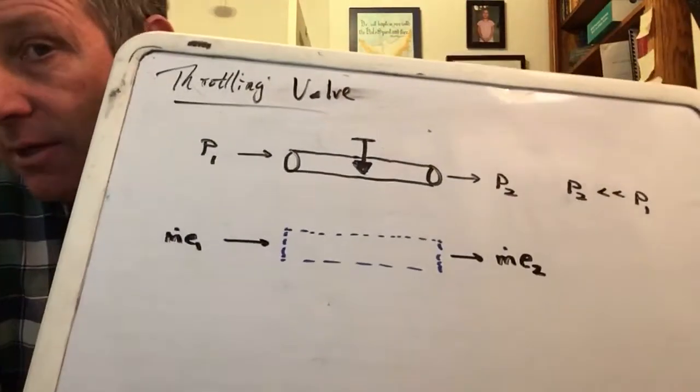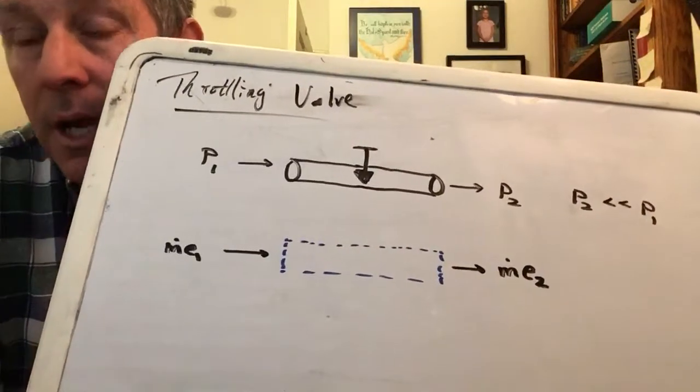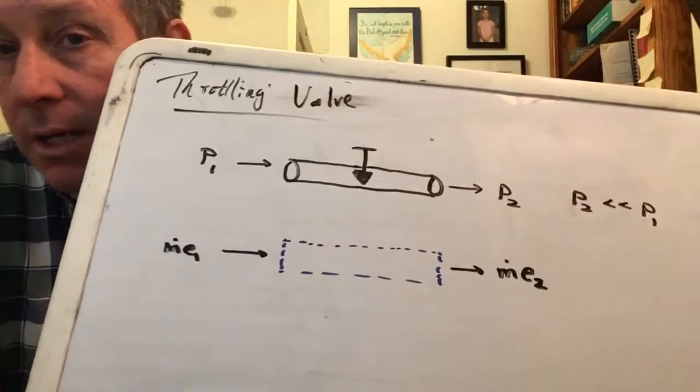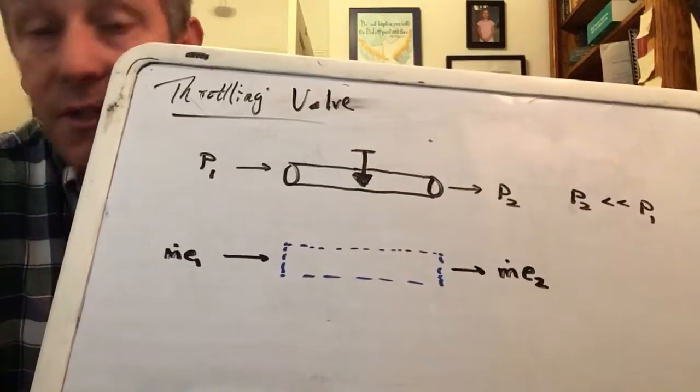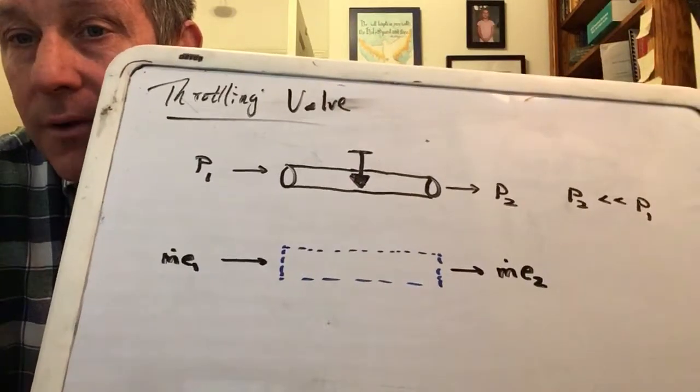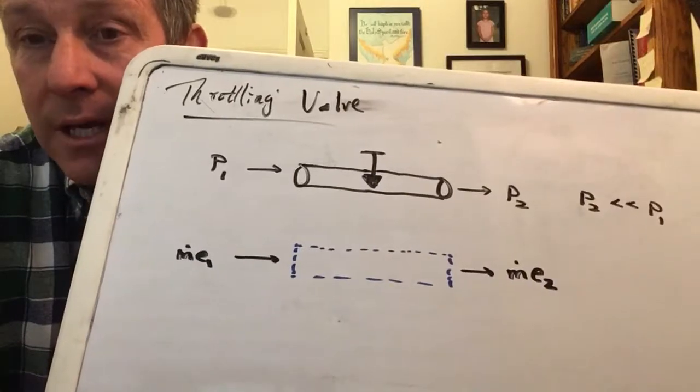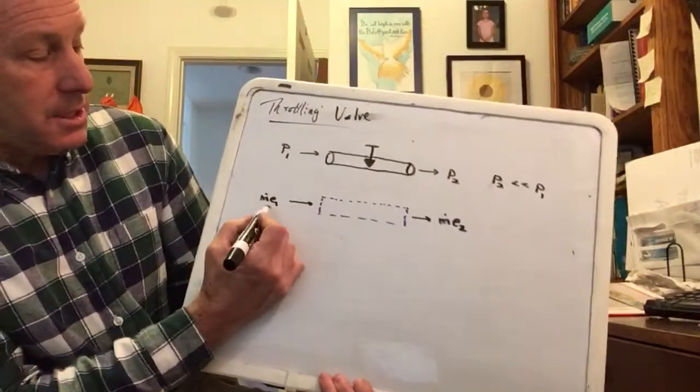In theory, of all the devices we've done - compressor, turbine, pipe, and those who did homework number eight part one the previous video did diffusers and nozzles - this is the easiest one. There's just m·e1 in and m·e2 out.